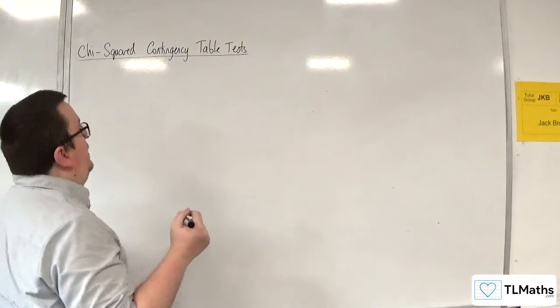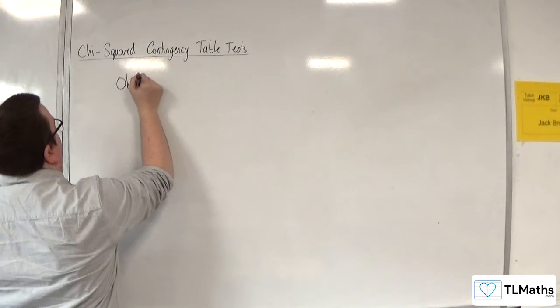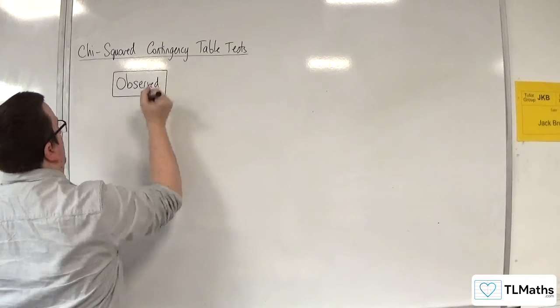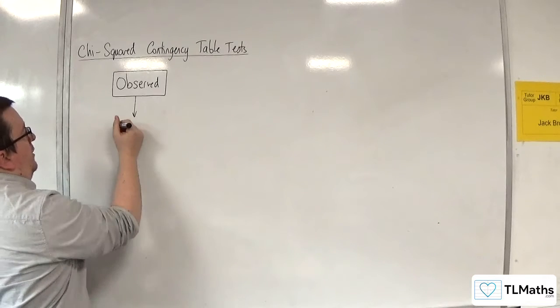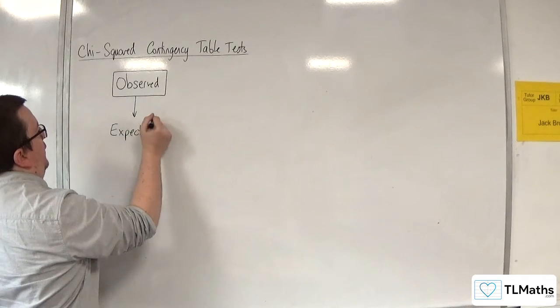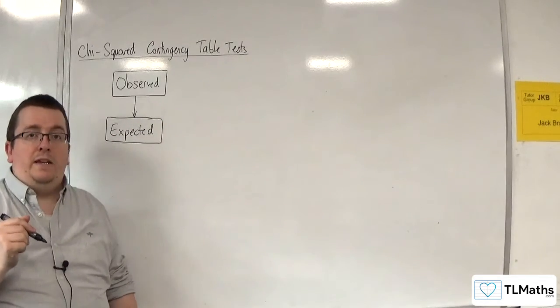The first thing that you're going to get given is a table with all of the observed values. From there, you're then going to construct a table of the expected values, assuming that the events are independent.